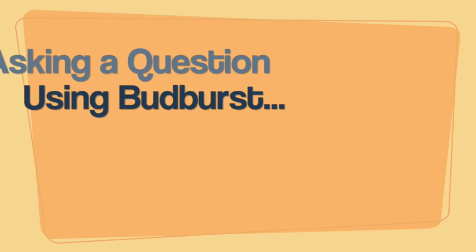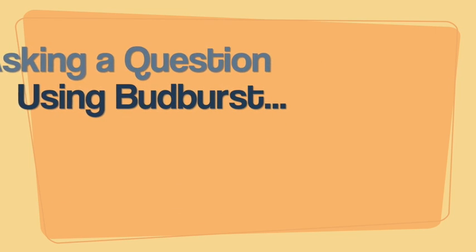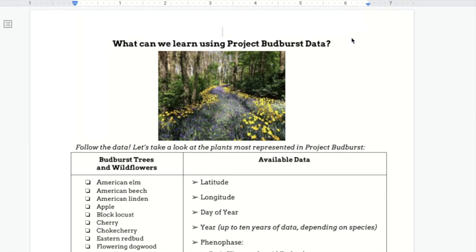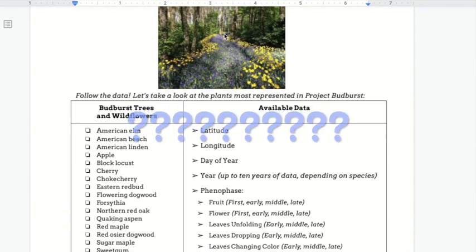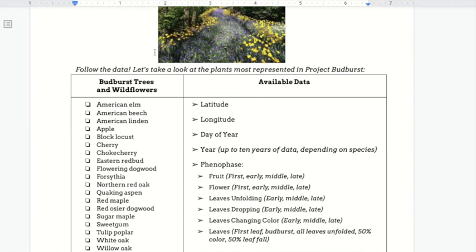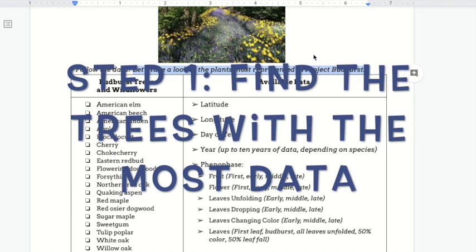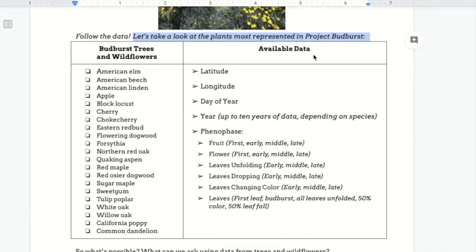All right folks, so you've learned about citizen science and you even recorded some of your own data in our last class for Project Bud Burst. But can we use the large data set from Project Bud Burst to ask our own questions? Let's see how we might do that. Abigail and I created this file to take a look just at the plants that are most represented in Project Bud Burst. This would be the first step in asking a question of a large data set.